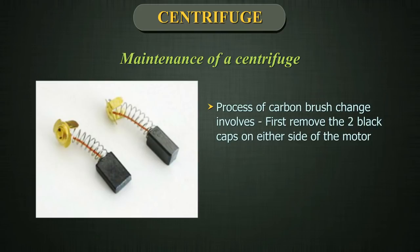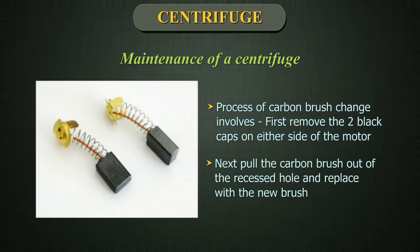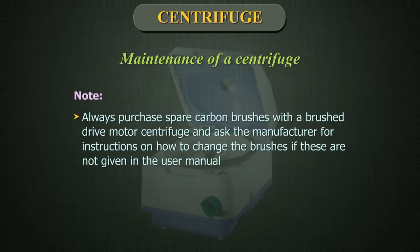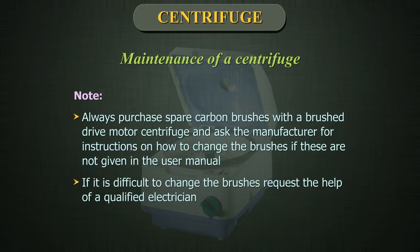The process of carbon brush replacement involves: first, removing the two black caps on either side of the motor; next, pulling the carbon brush out of the recessed hole and replacing it with a new brush. Always purchase spare carbon brushes with a brush-drive motor centrifuge and request manufacturer instructions for changing them. If it is difficult to change the brushes, request the help of a qualified electrician.